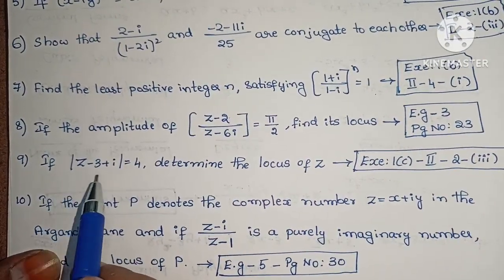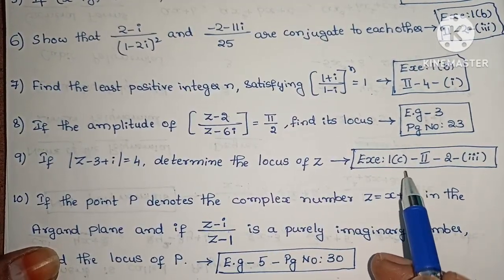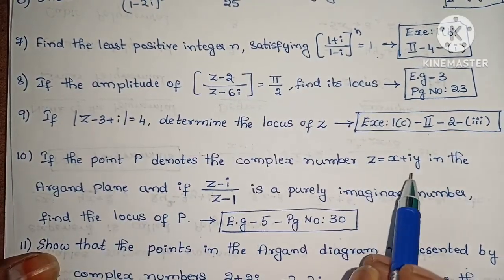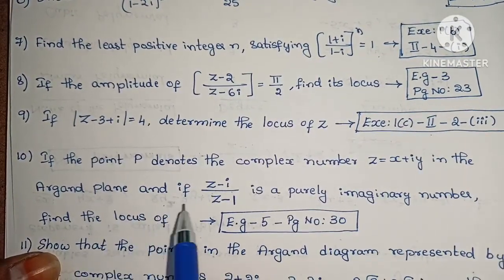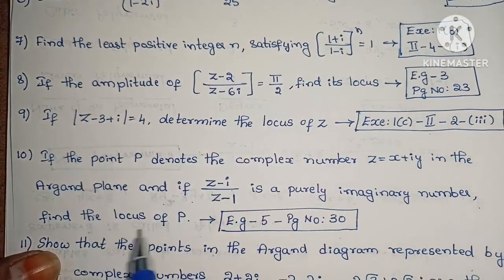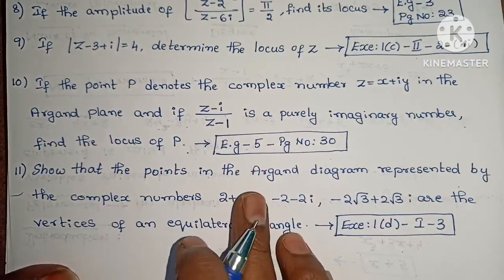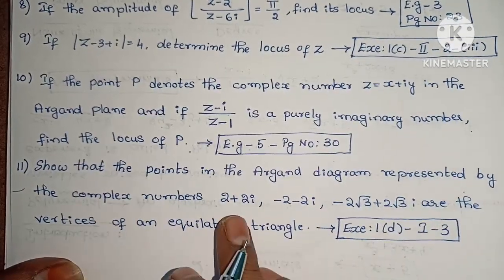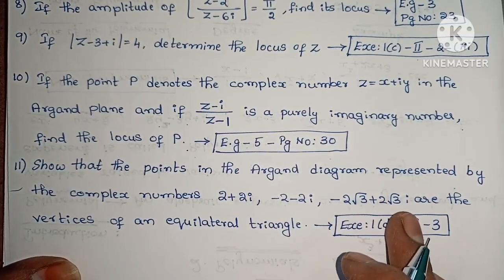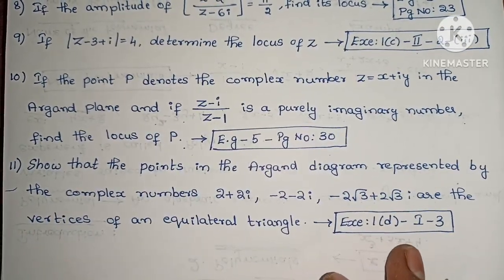Next, if |z - 3 + i| equals 4, determine the locus of z. Exercise 1c, second roman, second, third one. Next, if the point P denotes the complex number z equals x plus iy in the Argand plane and (z - i) / (z - 1) is a purely imaginary number, find the locus of P. Example 5, page number 30.